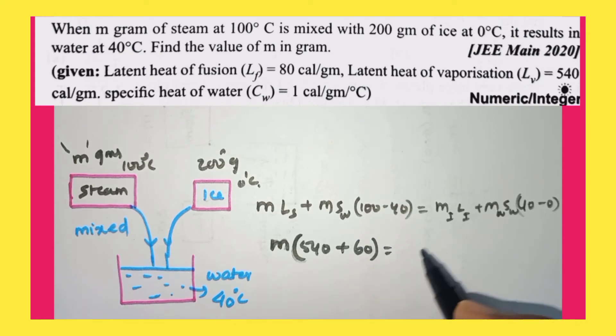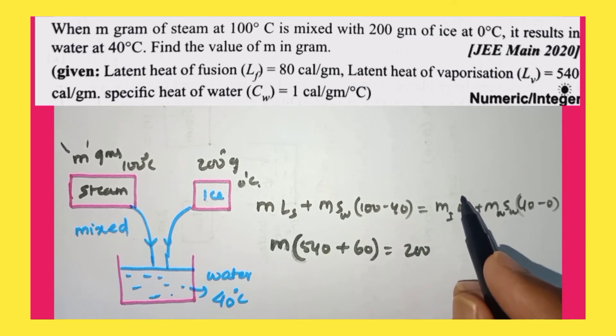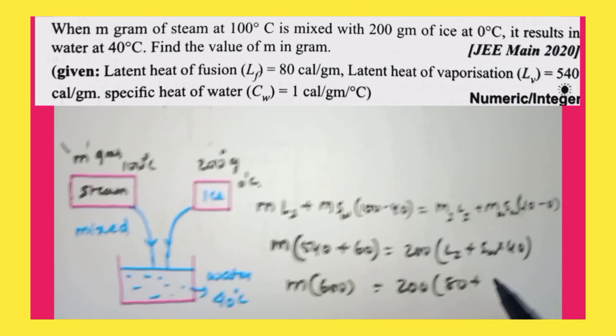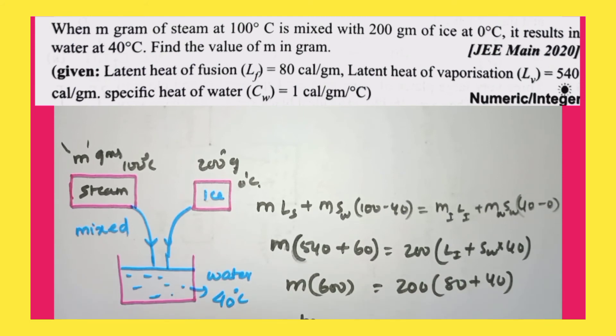Which is equal to mass of ice, how much is the mass of ice? 200. Latent heat of ice is how much? So if you common out mass of ice, how much you'll be getting? Latent heat of ice plus the specific heat of water into 40. So here, mass into 600 is equal to 200 into latent heat of ice is 80, the specific heat of water is 1 into 40.